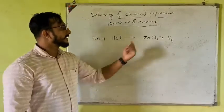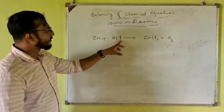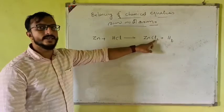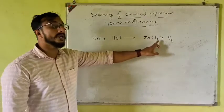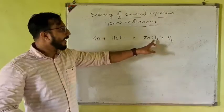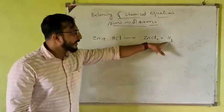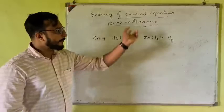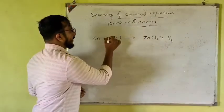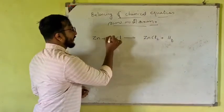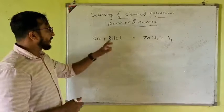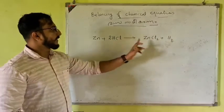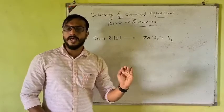On the reactant side, Cl is 1 — single chlorine. On the product side there are 2 chlorine. On the reactant side there is 1 hydrogen; on the product side there are 2 hydrogen. So we need to improve the balance.